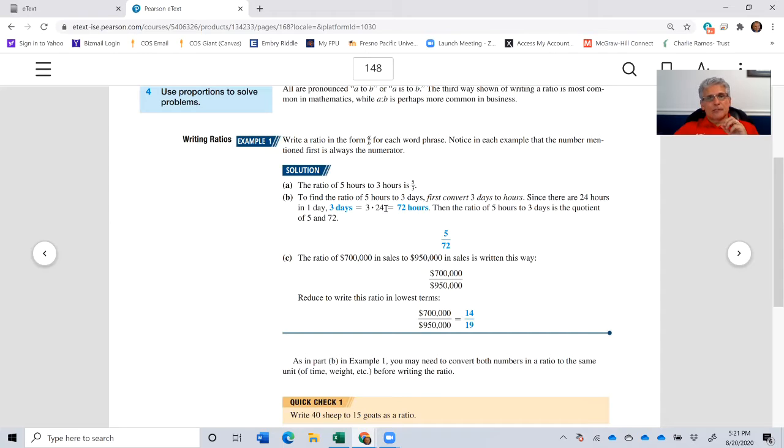What we might do is take the three days and recognize that the three days can be converted to hours. How do we do that? We'll take three days times 24, three times 24, and that's going to give us 72 hours. So the real ratio is not five to three, it's five to 72, five over 72.